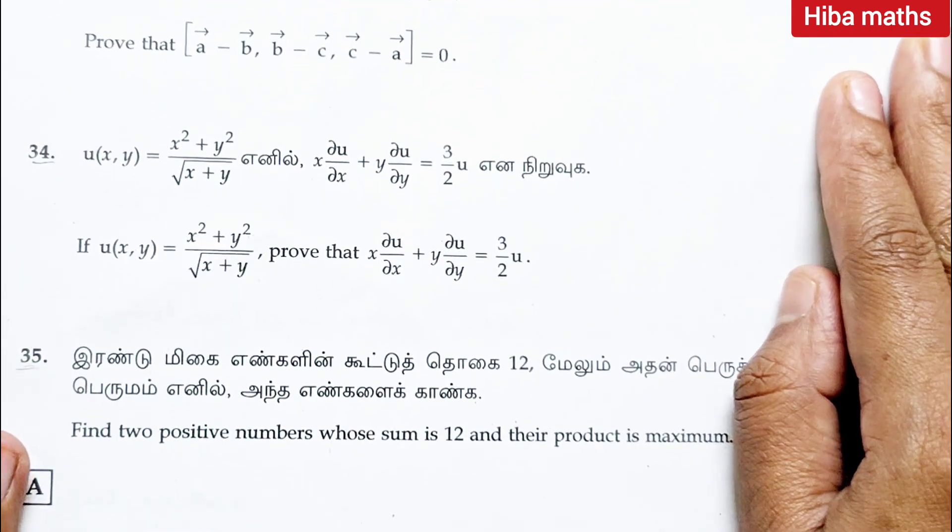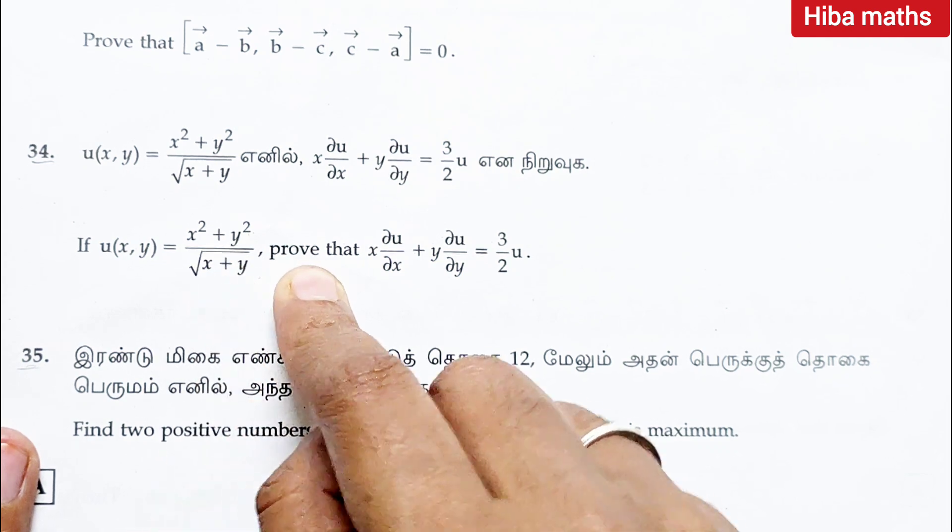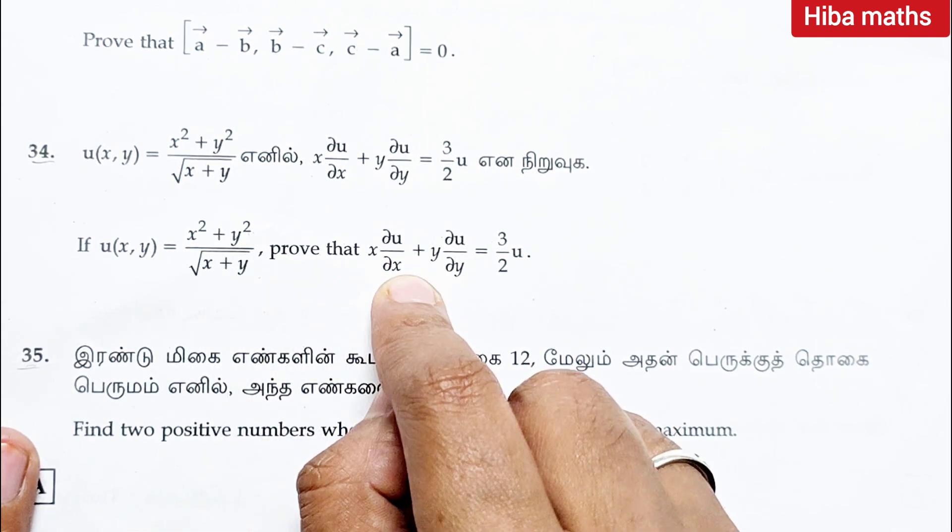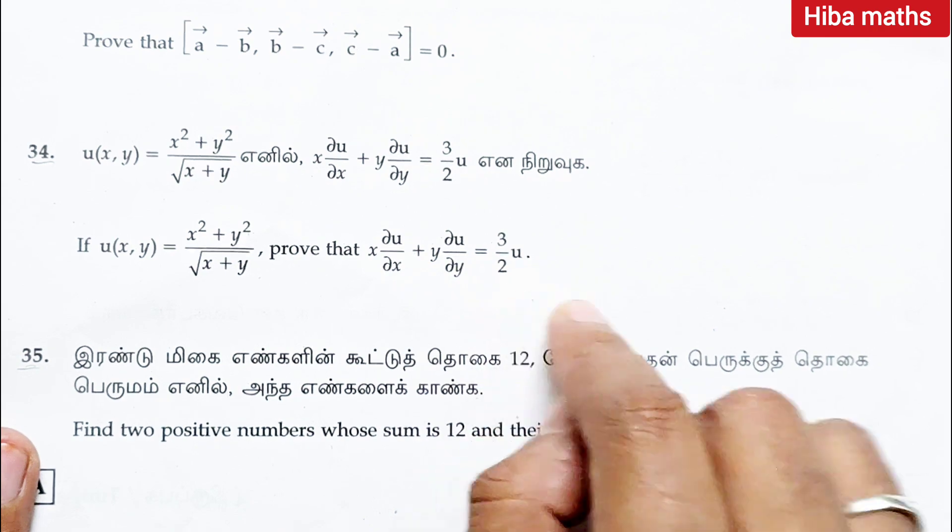Question 34: if u of x comma y is equal to x square plus y square by root of x plus y, prove that x into du by dx plus y into du by dy is equal to 3 by 2 times of u.